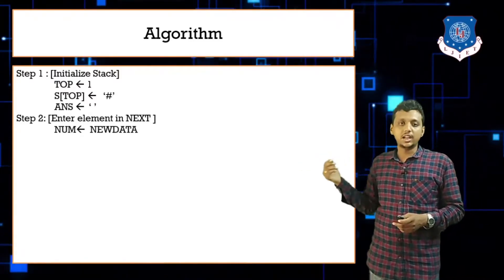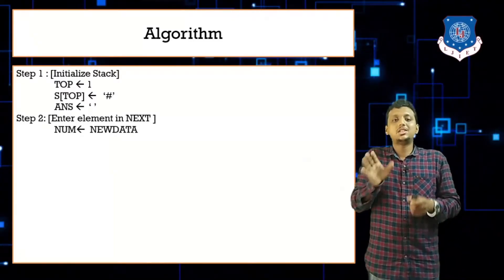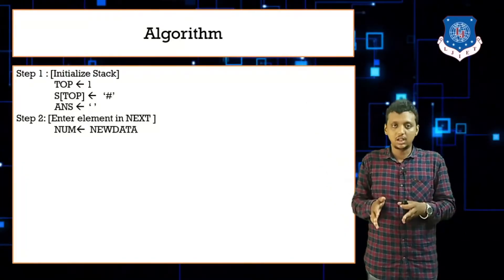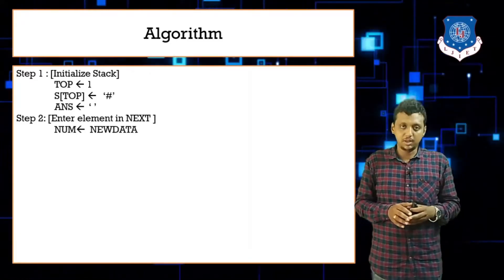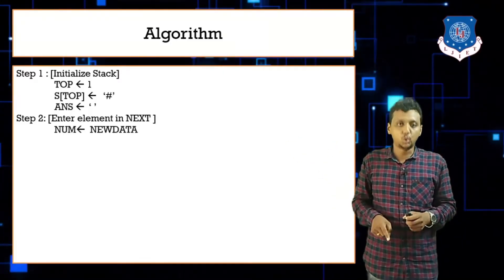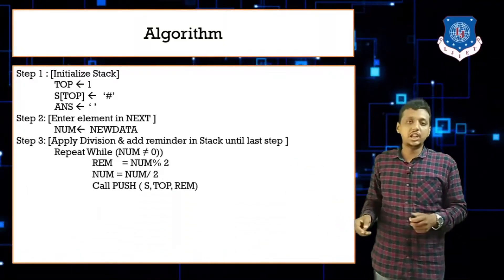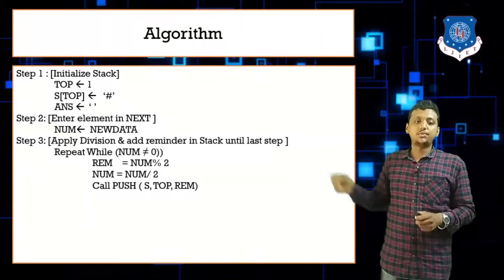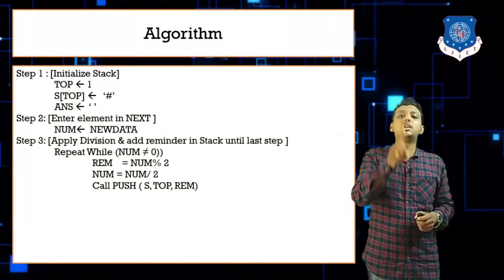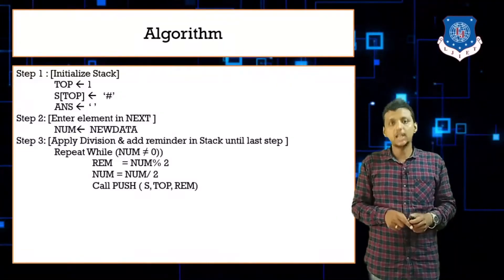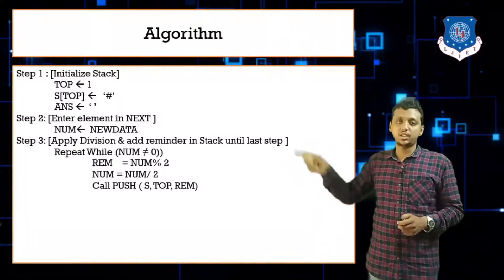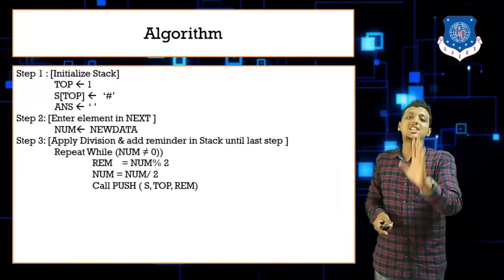Get the input from the user — store it in number. If the user enters 102, then number contains 102. Next, apply the division-and-remainder method: repeat a loop while number is not equal to zero. Inside the loop, compute remainder = number mod 2, then number = number ÷ 2, and push the remainder into the stack.